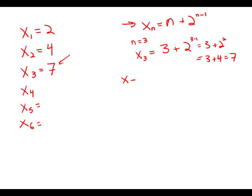So now we're going to try it for x sub 5. x sub 5 should equal 5 plus 2 to the 5 minus 1.